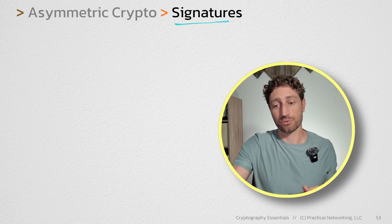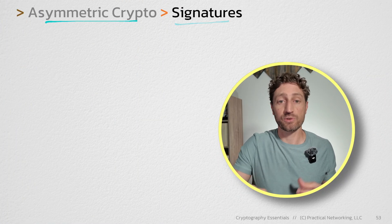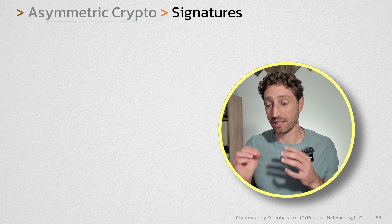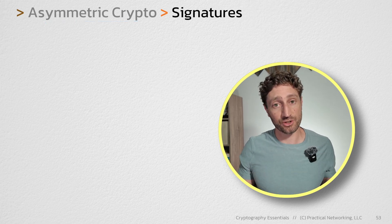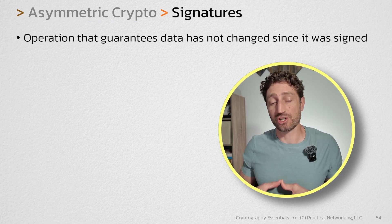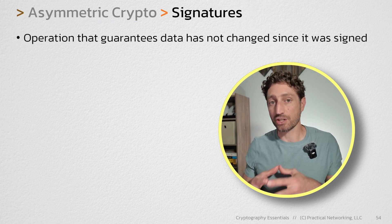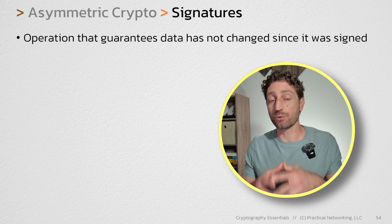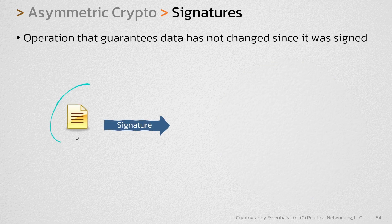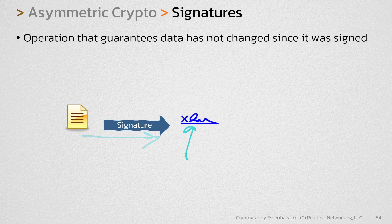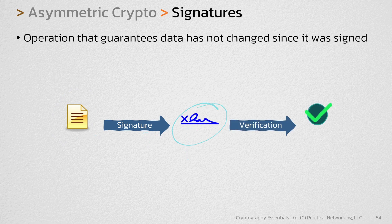Signatures are just one of the operations that exist within asymmetrical cryptography. The definition of a signature is this: it's an operation that guarantees data has not changed since it was signed. So if you have some sort of message, you can run that through a signature operation and that's going to create a signature. Then this signature can be used to verify that this data has not changed since the signature was created.